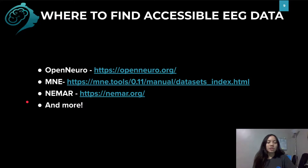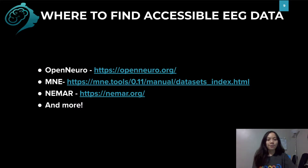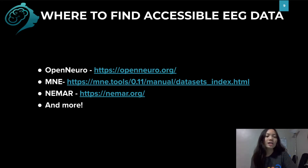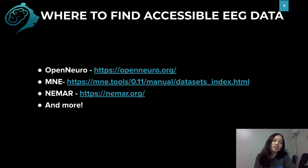So where can I find accessible EEG data? Here are some places where you can access free EEG datasets. The first is OpenNeuro, which is a free and open platform for sharing neuroimaging datasets, including fMRI, MEG, and EEG. MNE also has a few sample datasets that you can access directly in Python, and we'll look briefly at one of them in the Colab notebook for pre-processing. Another source is NEMAR, which stands for Neuroelectromagnetic Data Archive and Tools Resource, which has accessible EEG and MEG data archives, analysis, and visualizations. There are many other EEG datasets made publicly available by research institutions, so you can simply search for them online.